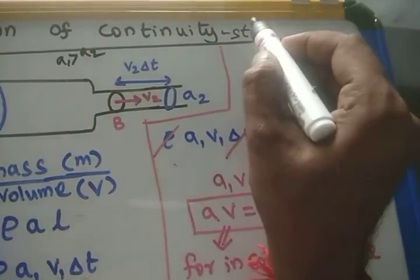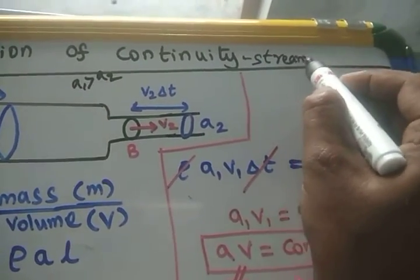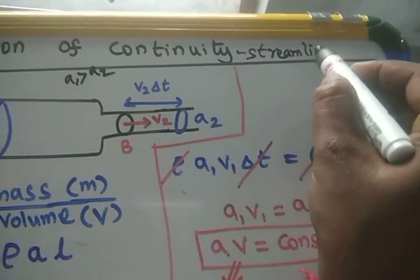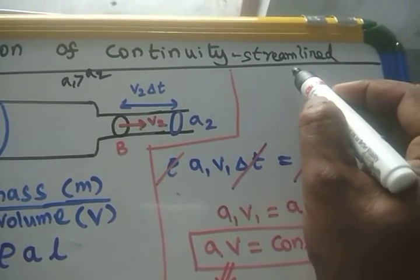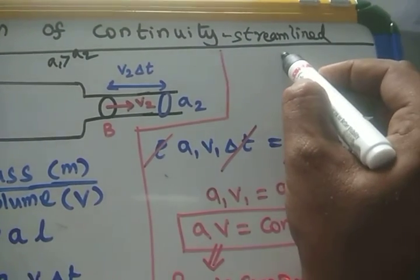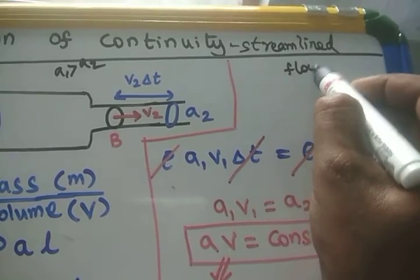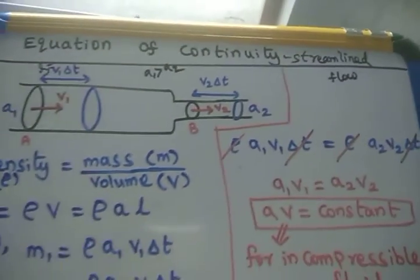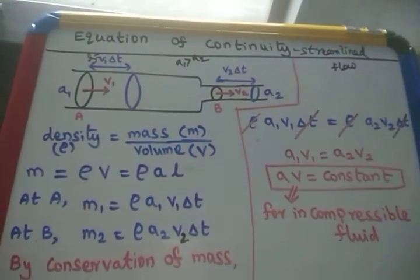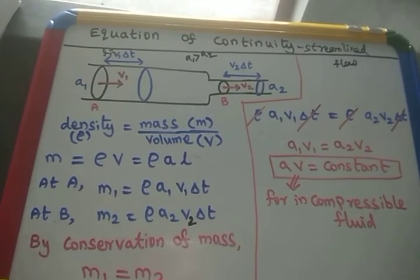Equation of continuity for streamlined flow. What is streamlined flow? Any flow in which different layers of the liquid have the same constant velocity is called streamlined flow.